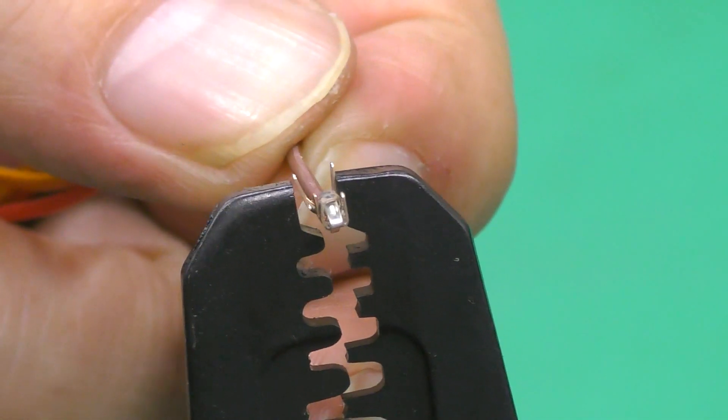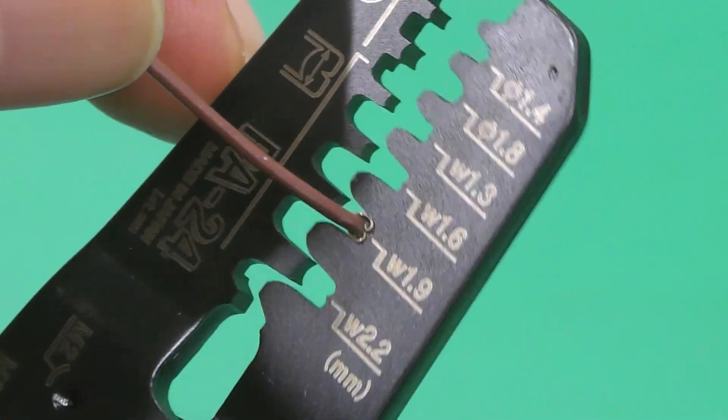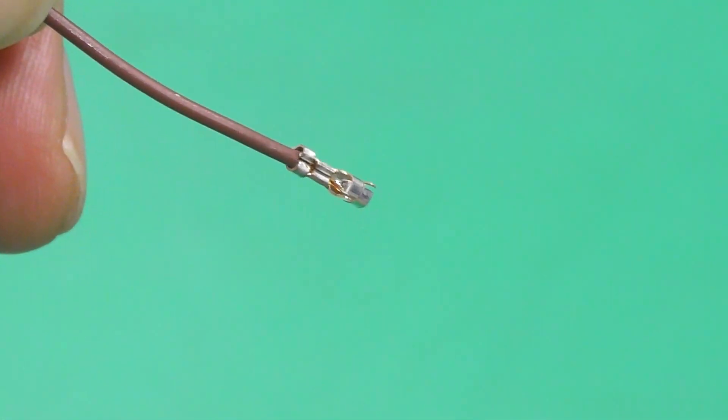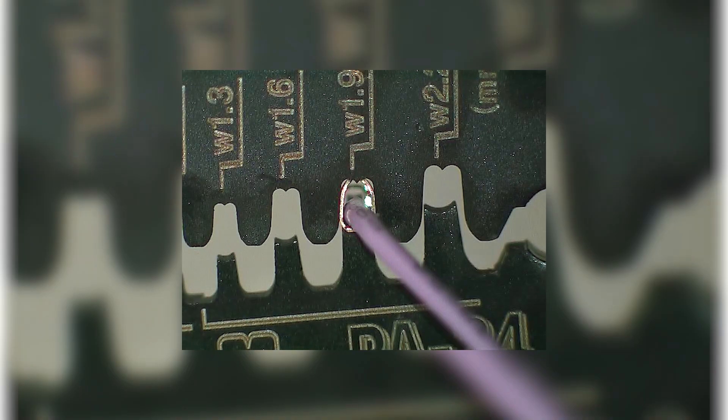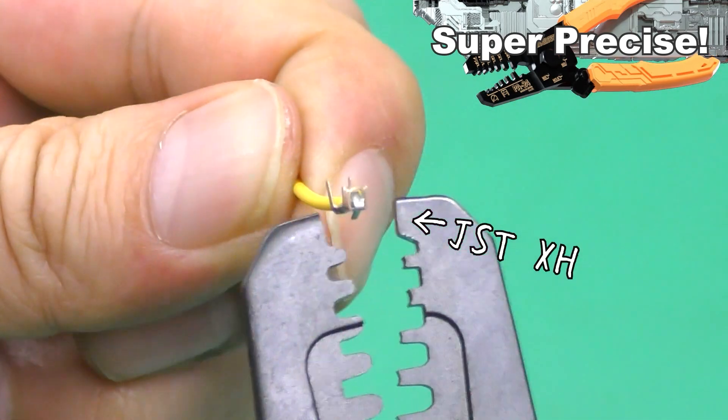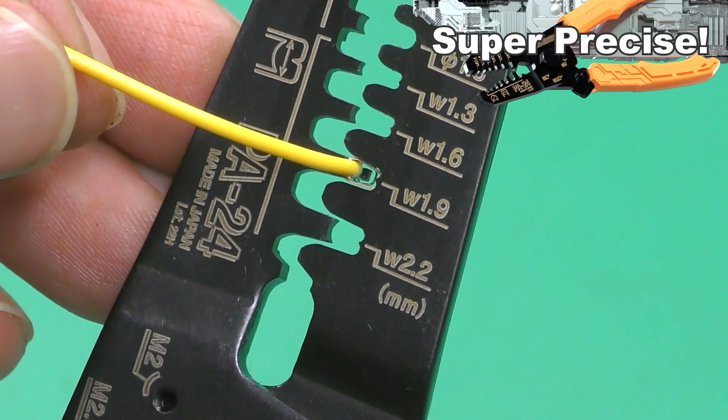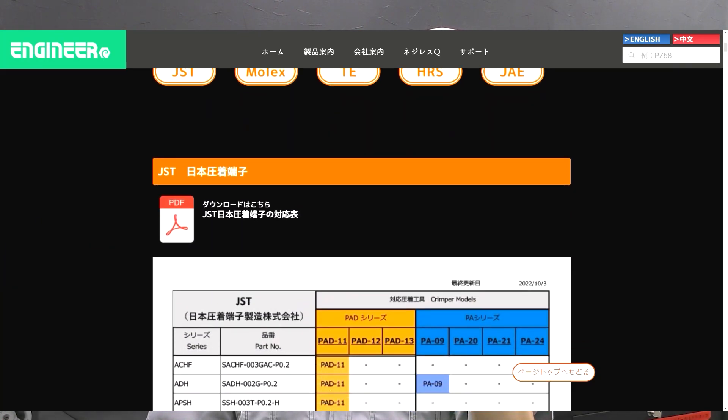The second feature is high precision crimping performance. It's compatible with more than 170 types of terminals for major manufacturers such as JST, Molex, and Tyco. The secret is the elaborated M-shaped dies. A neat M-shaped crimp can be made, so highly reliable connections can be completed without disconnection or poor contact. The compatible terminals can be seen on our website.